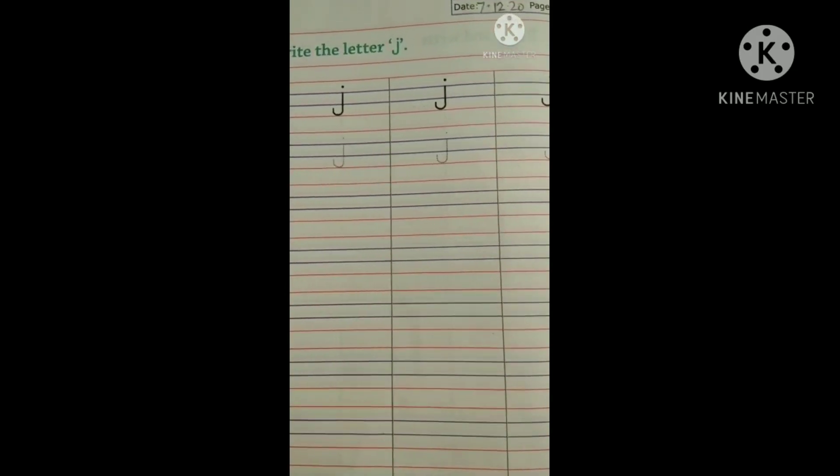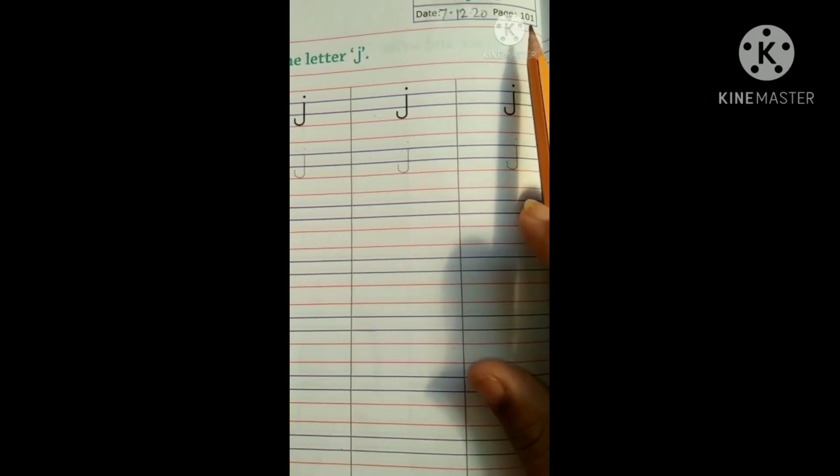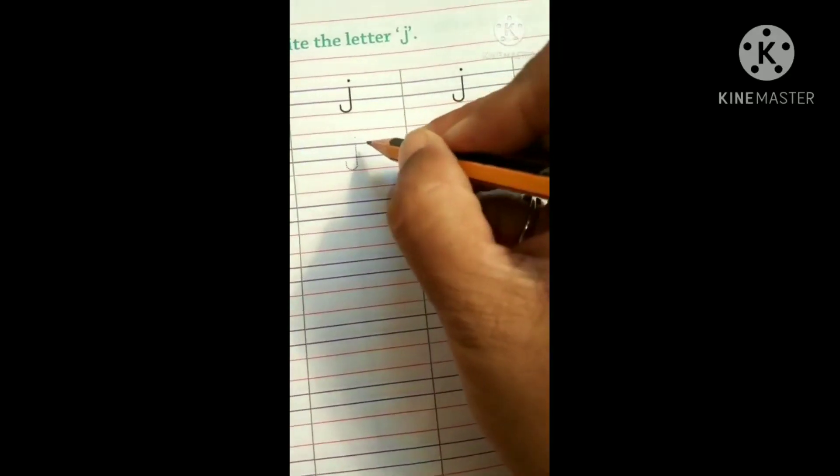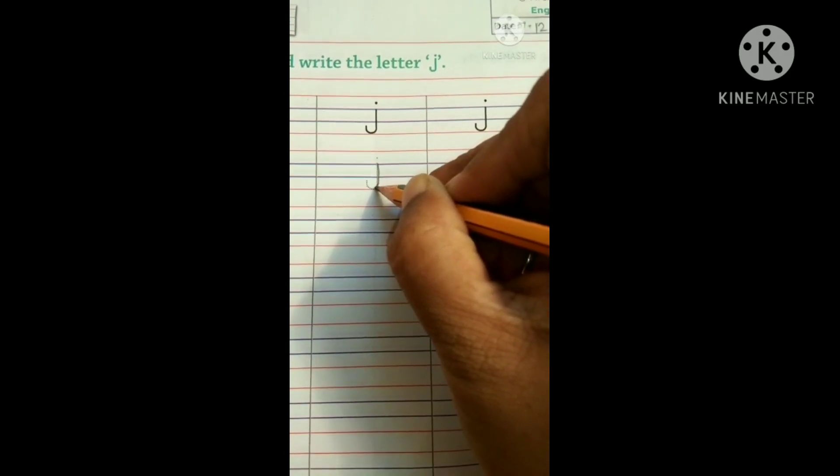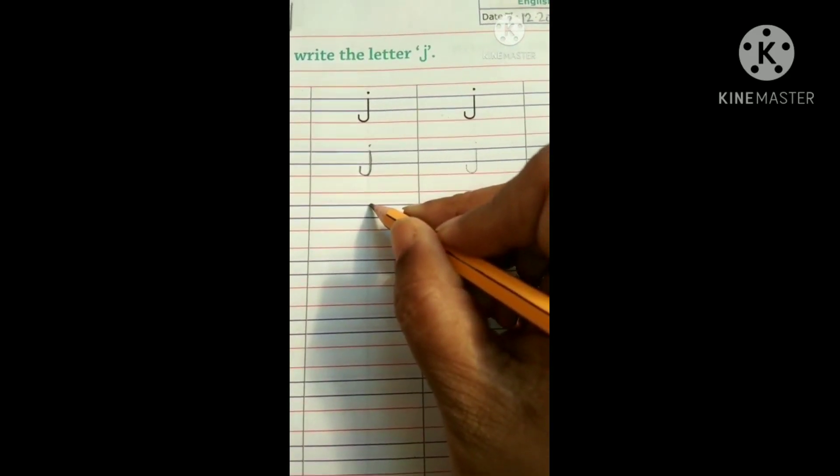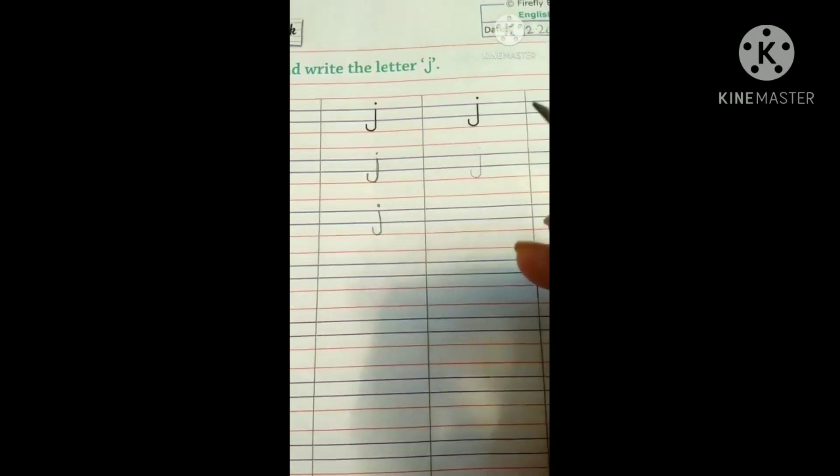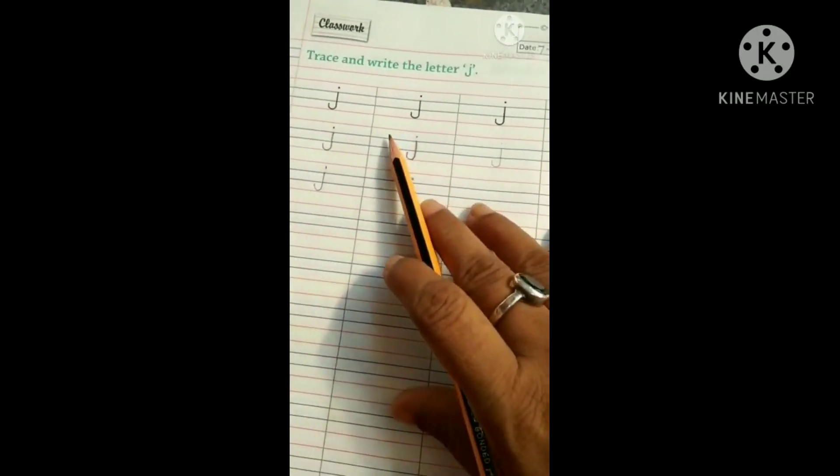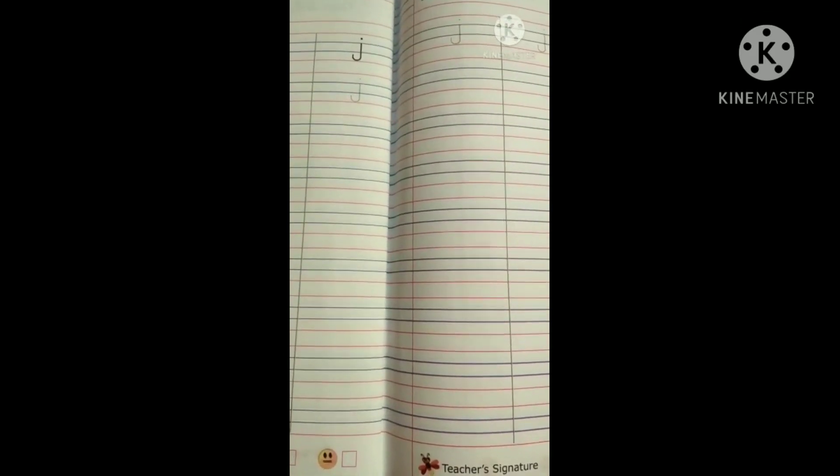Kids, in skill book, today we will write small letter J on page number 101. Write down the date first. It is 7th December 20. Now, see how to trace this from second blue line to red line. In this way. Put a dot. And write in the same way. From second line to red line. In this way. So, you know you have to complete these two pages. This one is your classwork and homework. So, please complete these two pages. Bye-bye, kids. See you. Have a nice day. Bye-bye.